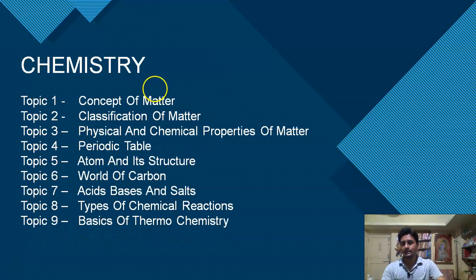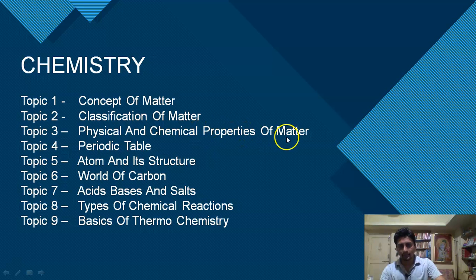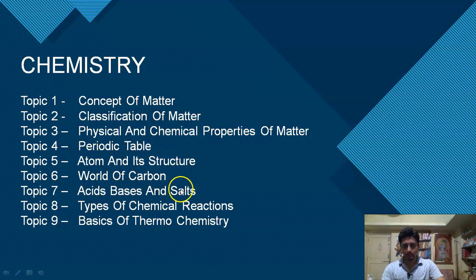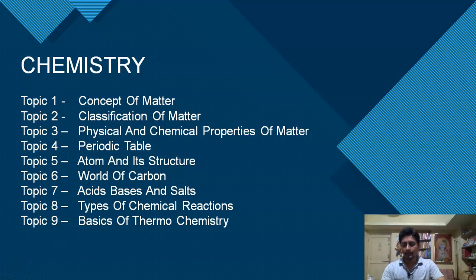Similarly, let us discuss chemistry. We can start from the basics with the concept of matter, followed by classification of matter, then physical and chemical properties of matter, periodic table, atom and its structure, world of carbon, acids, bases and salts, types of chemical reactions, and basics of thermochemistry. These are the important topics of chemistry which you have to study and revise again and again, because whatever questions are asked in the examination will surely be asked on these topics only.